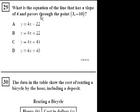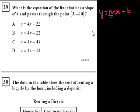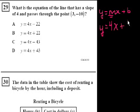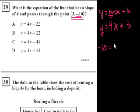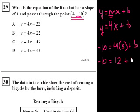Problem 29: What is the equation of the line that has a slope of 4 and passes through the point (3, -10)? If the slope is 4, we write it in slope y-intercept form: y equals 4x plus b. We substitute in the given point — y equals -10 when x equals 3 — giving us -10 equals 4 times 3 plus b, so -10 equals 12 plus b.